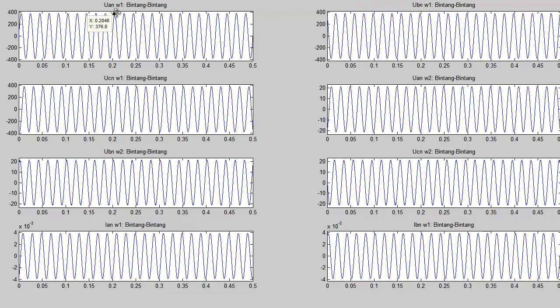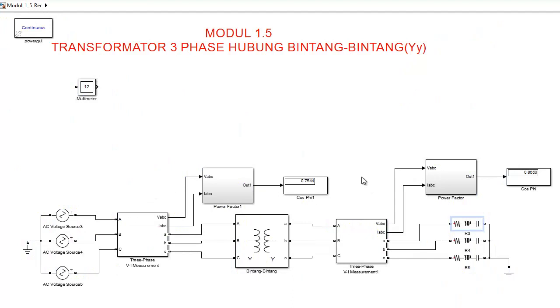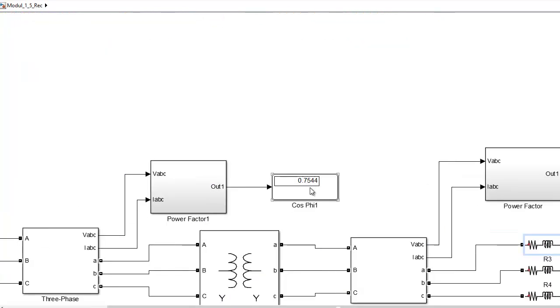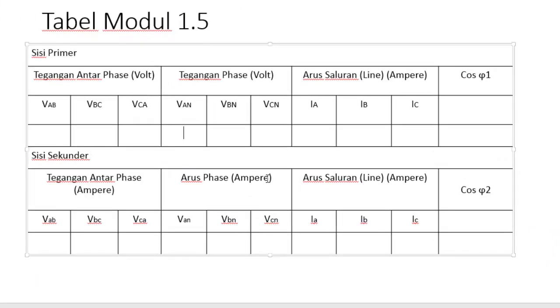Ini sudah keluar untuk nilainya. Pertama saya perbesar. Pertama adalah mengetahui nilai masing-masing di sisi primer dulu, itu tegangan tiap fase. Saya disini peroleh, coba tarik, 380. Kemudian untuk arusnya di sisi primer, arus ini terhadap netral terhadap line. Kemudian ini arusnya 0.0039. Untuk cos φ power factor disini di sisi primer adalah 0.7544.